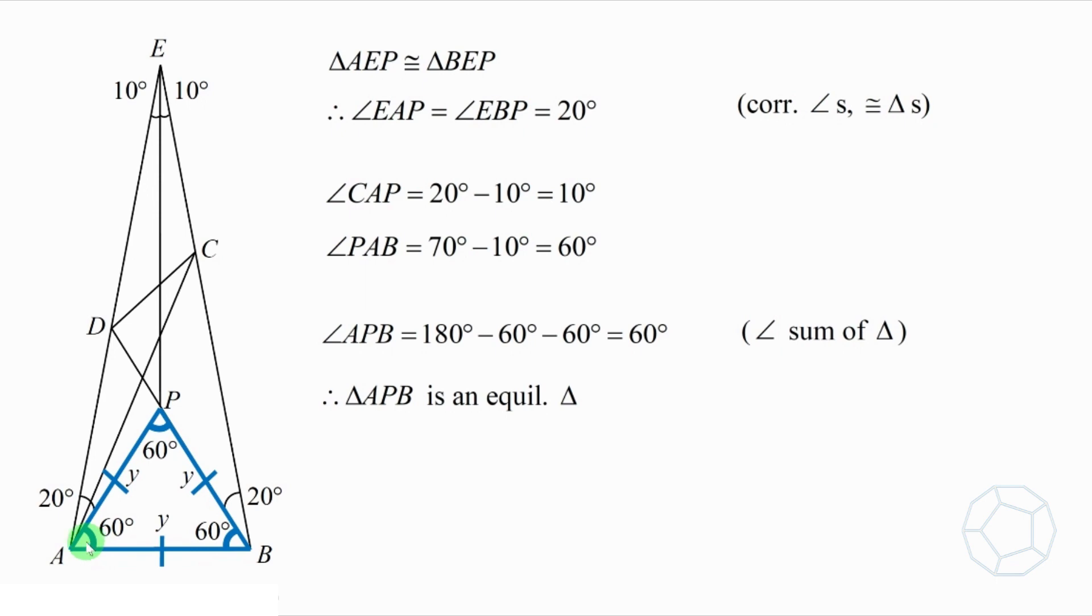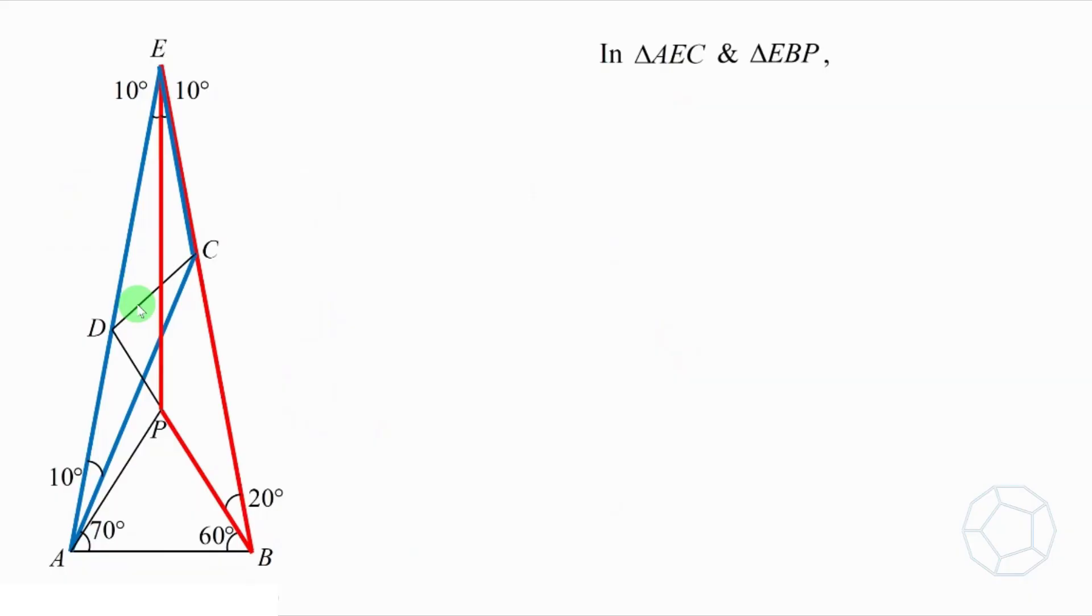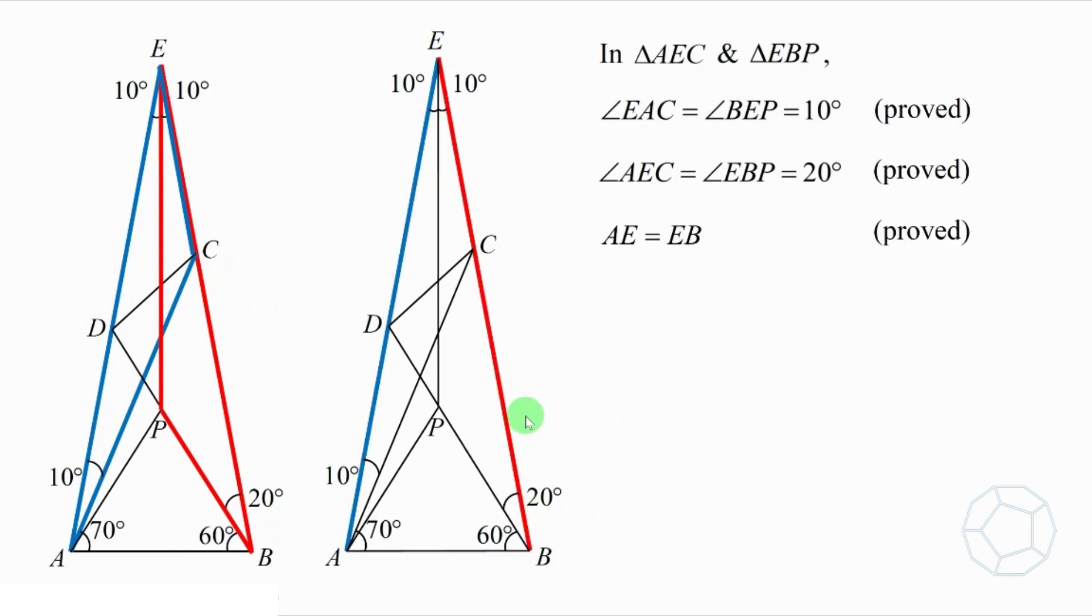Now, we're going to prove two more pairs of congruent triangles in the second part. In this part, we'll look at two other triangles which are not very obvious. The blue triangle AEC and the red triangle EBP. First of all, angle EAC and angle BEP both are 10 degrees. Next, angle AEC and angle EBP both are 20 degrees. Lastly, AE and EB are equal in length. All these three results are proved in part 1.